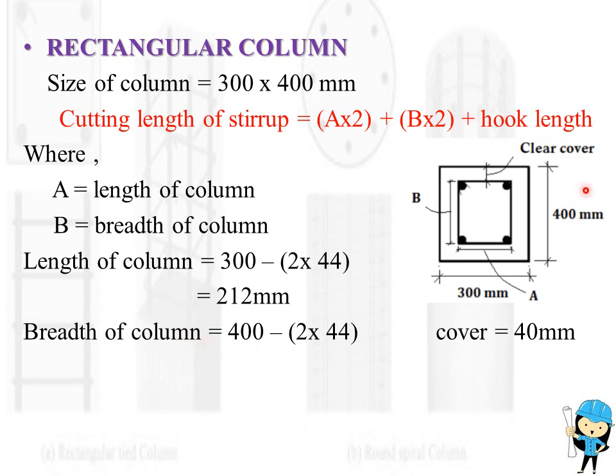Similarly, breadth of the column is 400 mm minus 2 x 44 mm, which is equal to 312 mm.